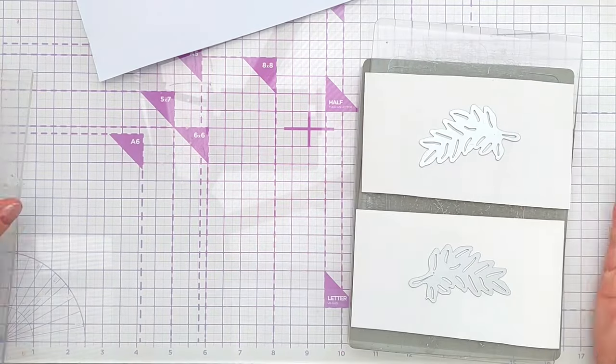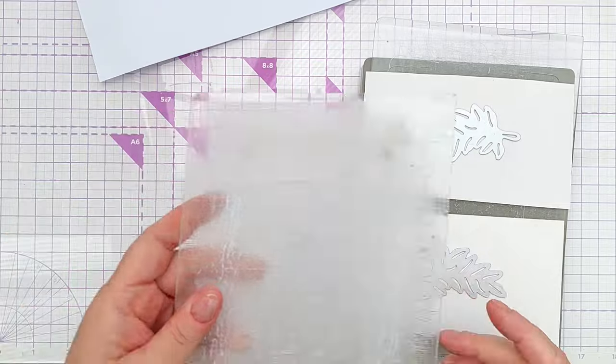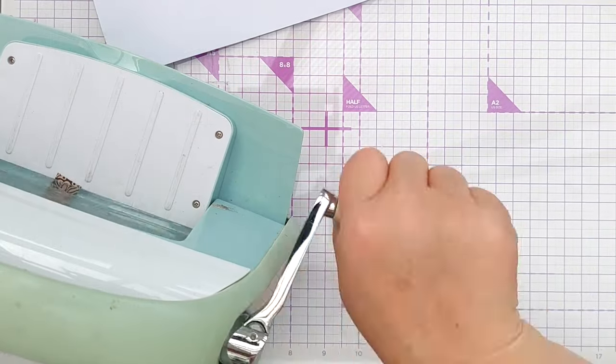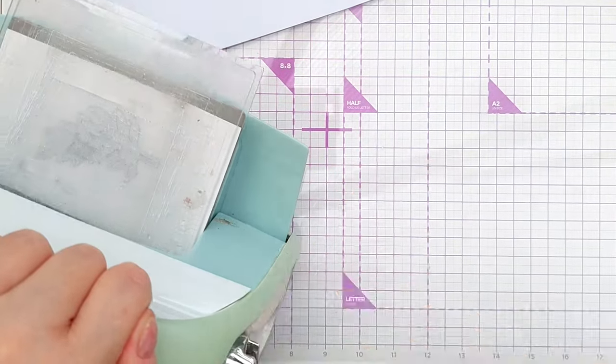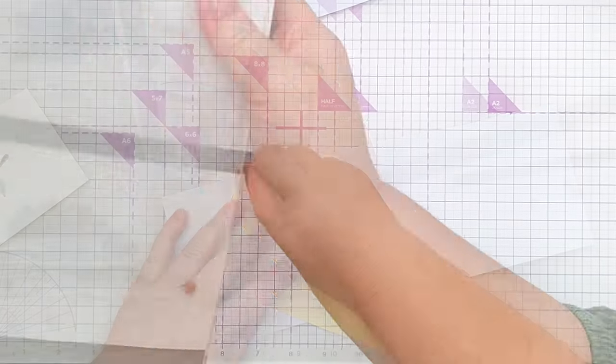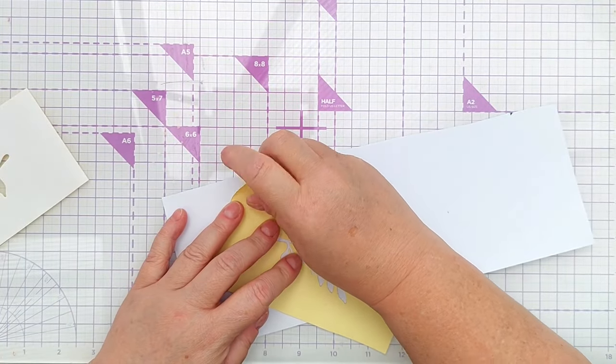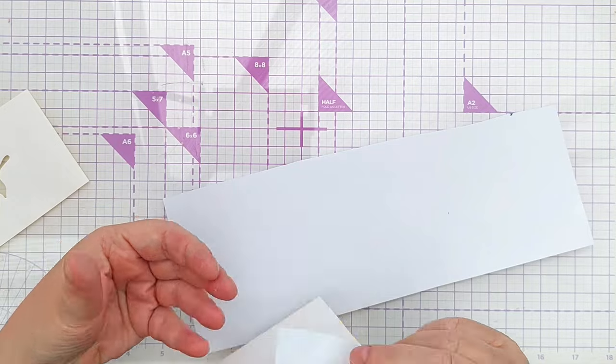I have here some masking paper and two mirror image leafy branchy dies and I'm running these together through my die cutting machine to create stencils of the leafy branchy dies.